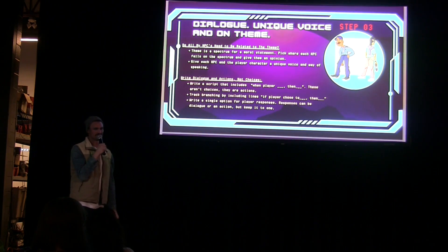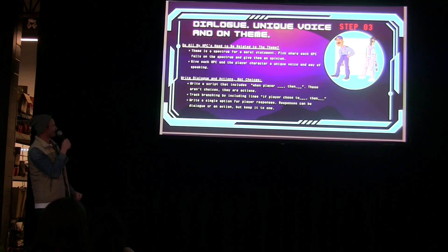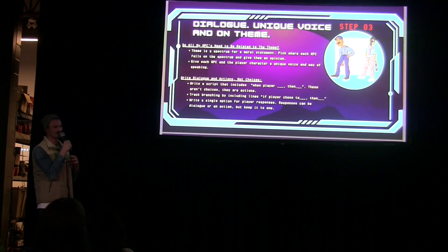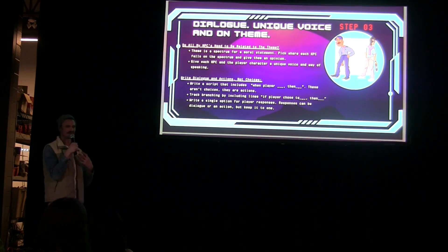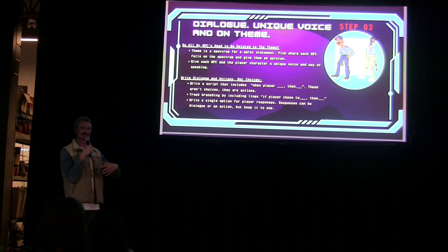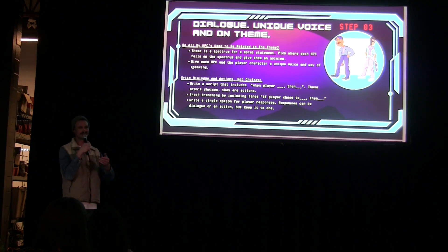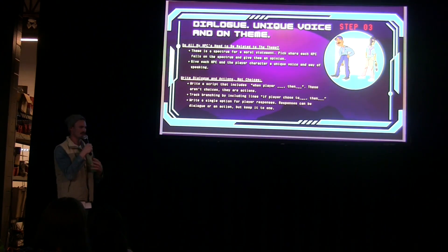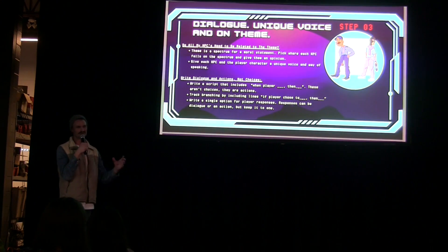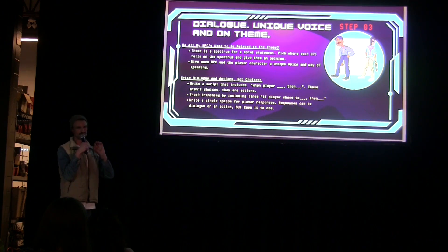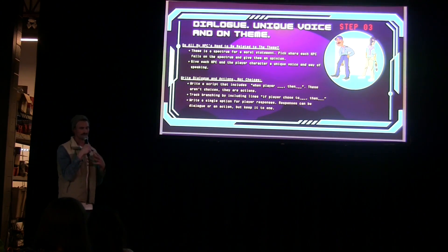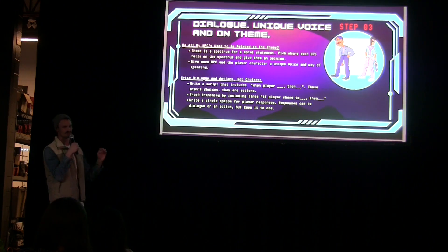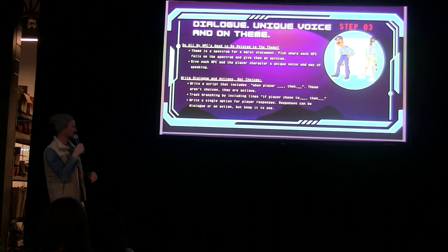Do all your NPCs need to be on theme? Yes. All the characters by this point should be fleshed out, and as you're writing your dialogue each one should have a unique voice tied back to the theme — the theme is like a moral spectrum, so pick somewhere on that line for each NPC. As you're writing your dialogue now, make it into one single document. This is not the time to do your branches or your choices — you just want one smooth linear narrative. Keep it concise, keep your story on point, put it into one space, make sure your dialogue is crisp with a clear voice. Don't worry about choices — that's the next step.